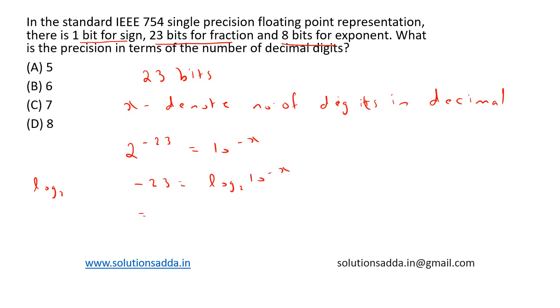This is equal to minus 23 equals minus x log 2 of 10. Solving this, we will get x is equal to 6.92. So based on the options, option C, 7, is the right choice.